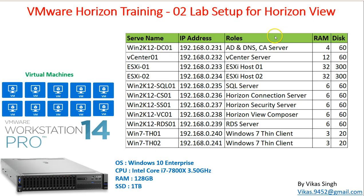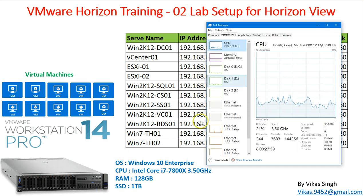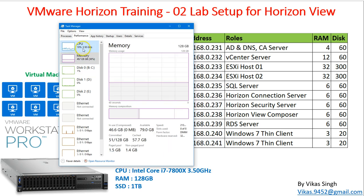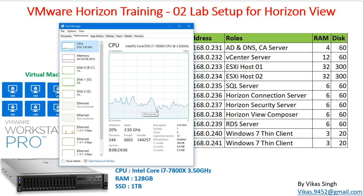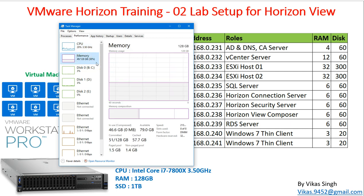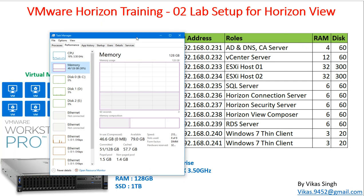All machines are currently in a running state. If I check the RAM and CPU utilization of the physical machine, CPU is at about 20 percent and RAM is being used at around 48 to 49 GB. Because of hyper-threading for memory utilization, actual memory usage appears lower.